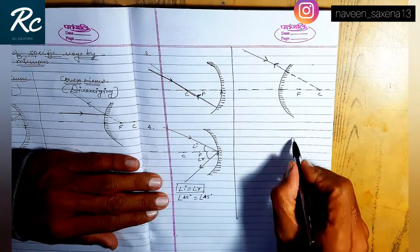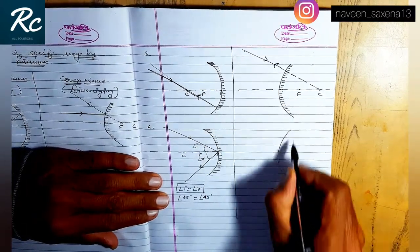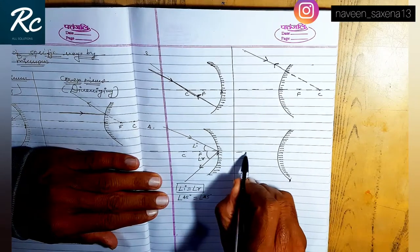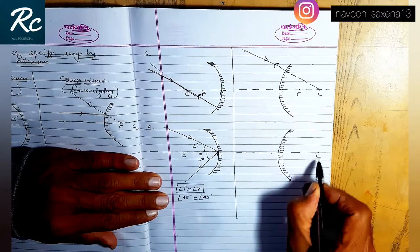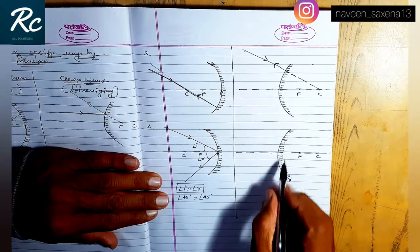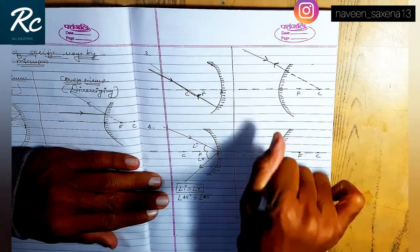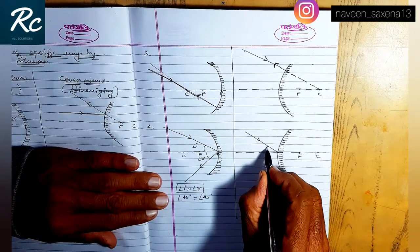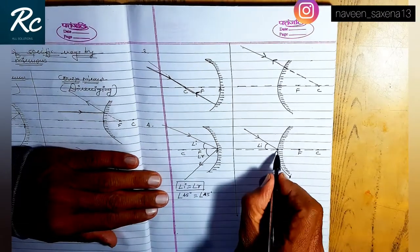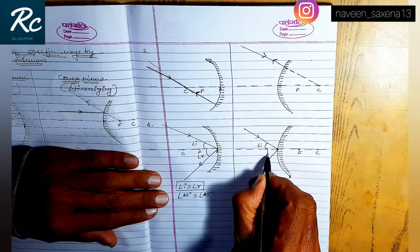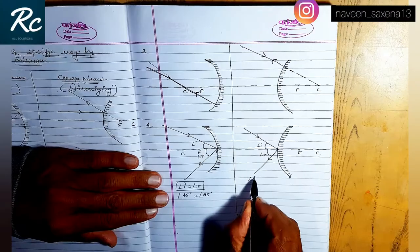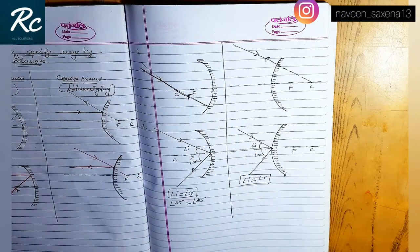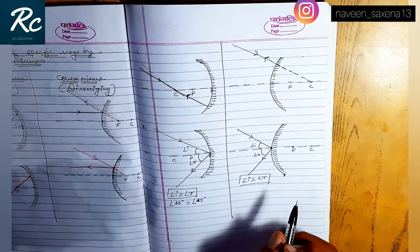For the convex mirror in the fourth condition, the center of curvature and focus point are behind the mirror. The incident ray strikes at the pole at angle I, then reflects at angle R. In this condition, angle I is equal to angle R.